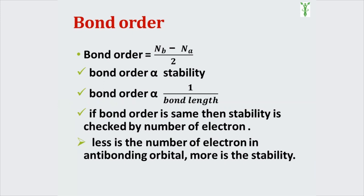Suppose we have two molecules having bond order 2.5 and 3 respectively. The molecule having bond order 3 is more stable compared to the molecule having bond order 2.5. Bond length is inversely proportional to bond order — if bond order is more, bond length is less. So the molecule with bond order 2.5 has a higher bond length than the one with bond order 3. Bond order and bond length are inversely proportional, but bond order and stability are directly proportional.